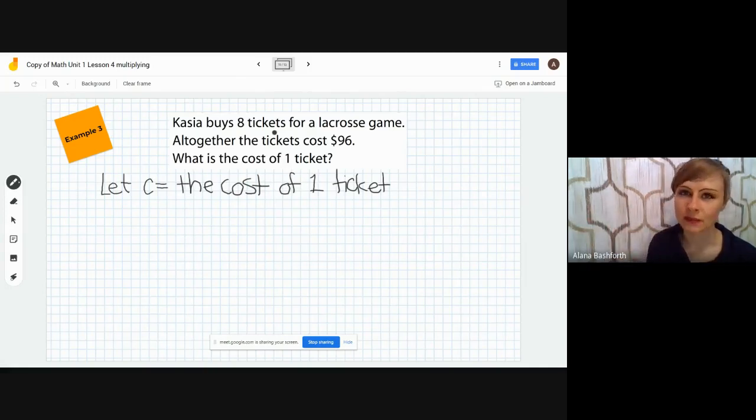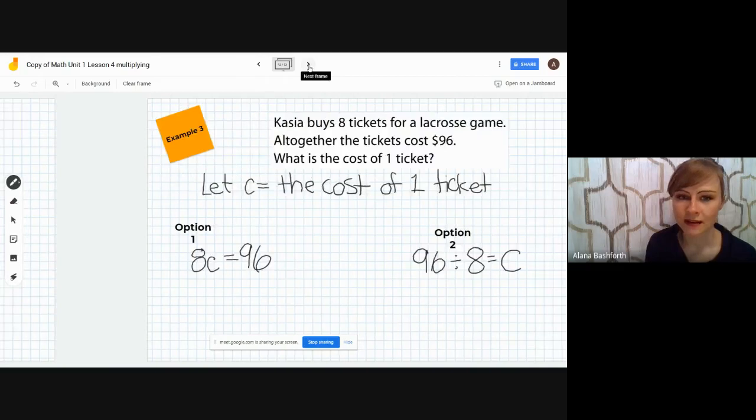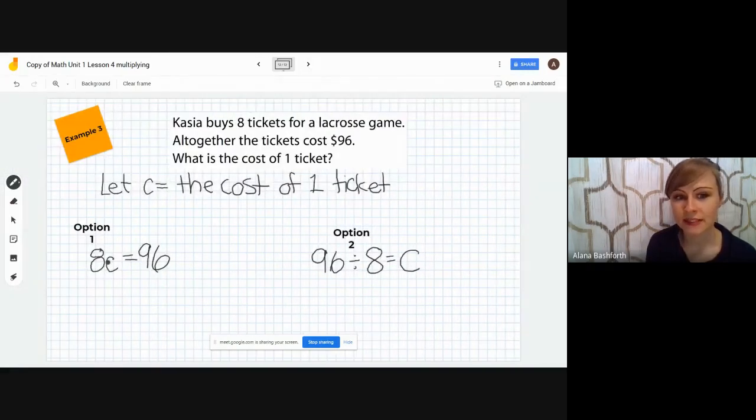The next thing you need to do is find an equation. Again, I chose a multiplication and a division to show you that you can do either one. I chose 8 times C equals 96, because we know the total number of tickets is $96, and we know that she buys 8 of them. So, we just need to know how much each one costs. Or you could go 96 divided by 8 equals the price of one ticket.